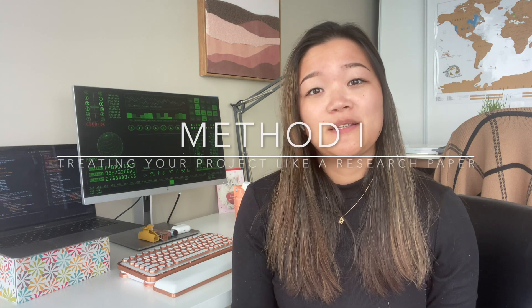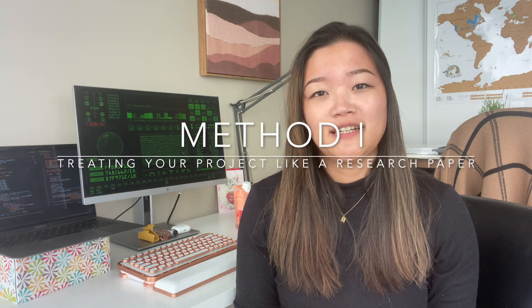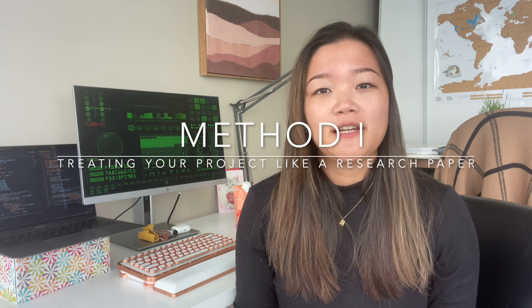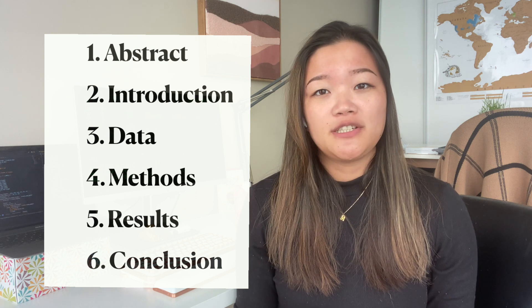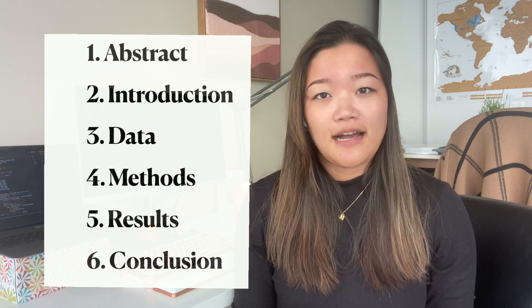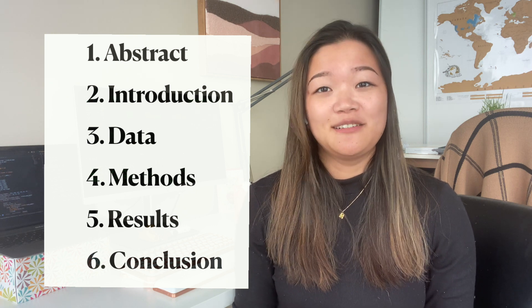The very first method you can use to turn your existing assignments into stellar portfolio projects is to treat it like a research paper. The typical structure of a research paper is: abstract, introduction, data collected, methodology, analysis, results, and conclusion. This is exactly how you want to add that storytelling component to your project — to make it more concise, more clear to the reader, and more eye-catching.